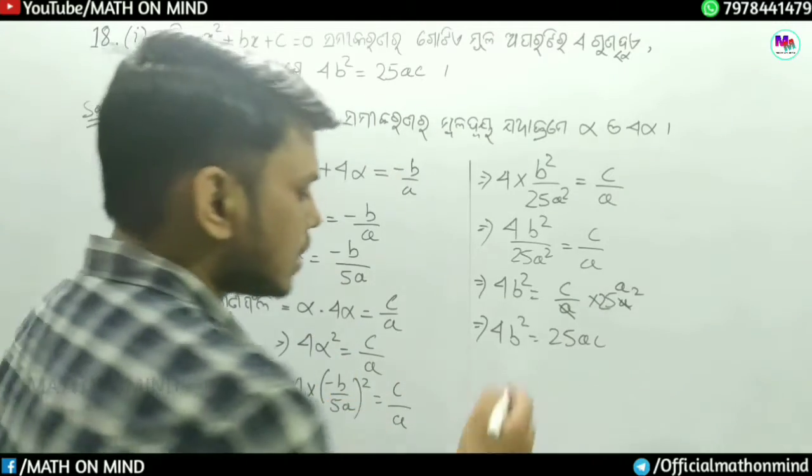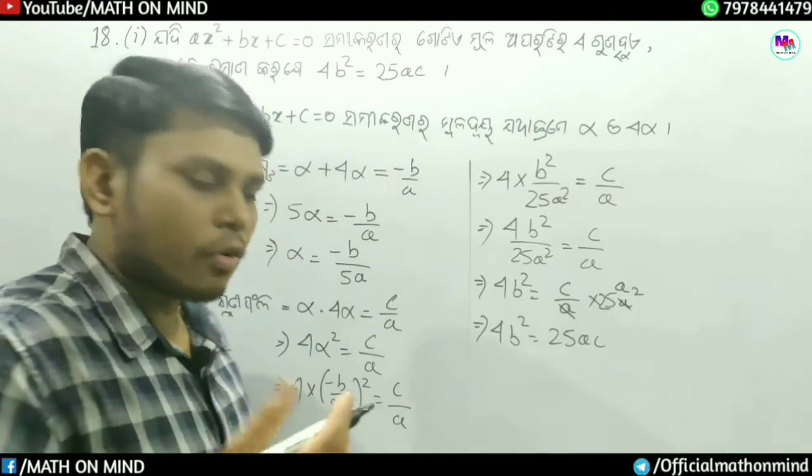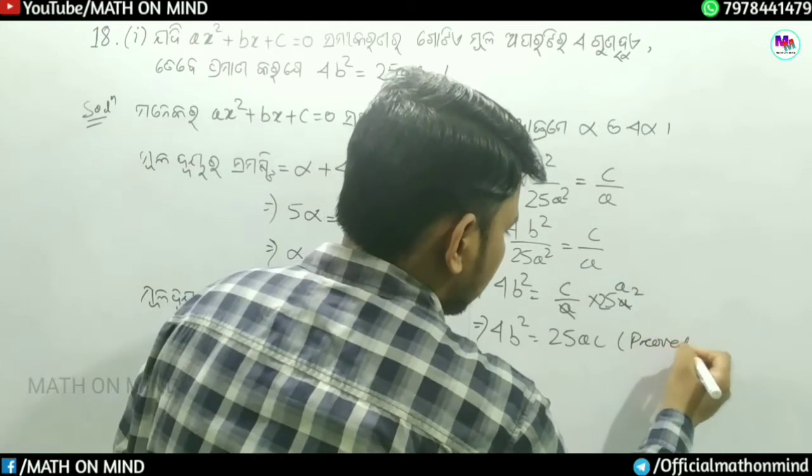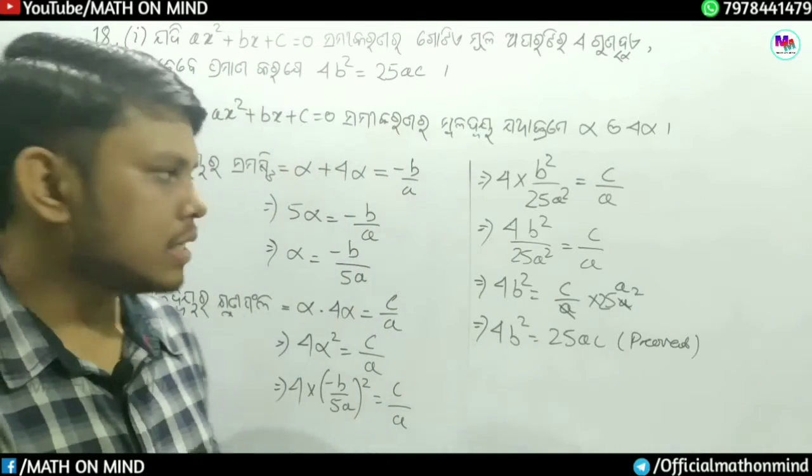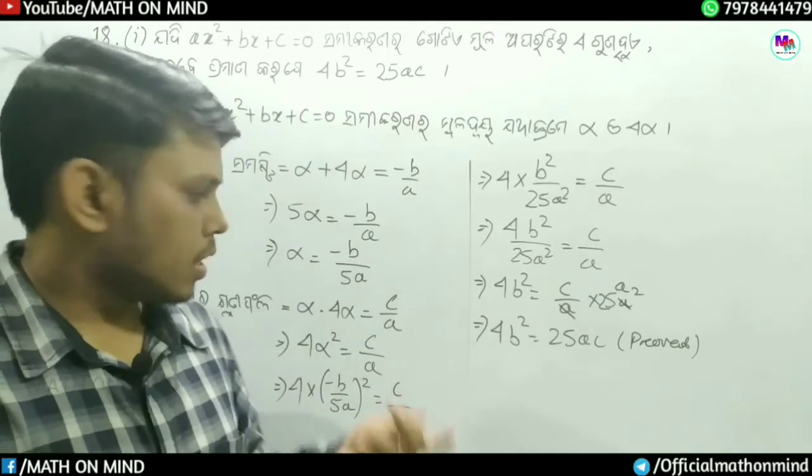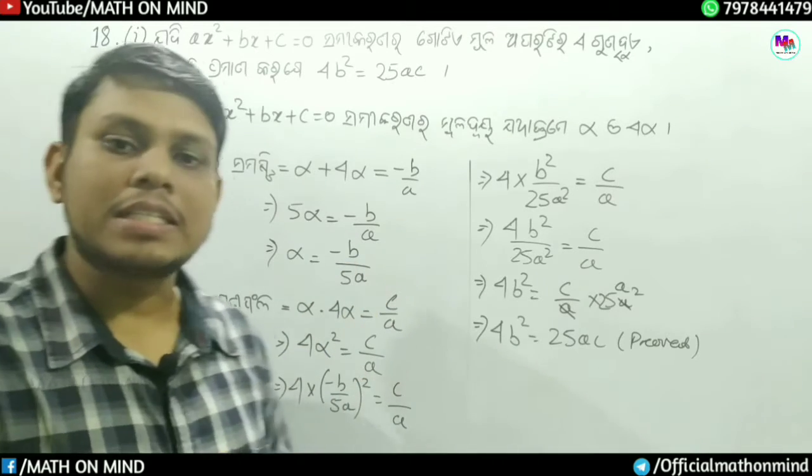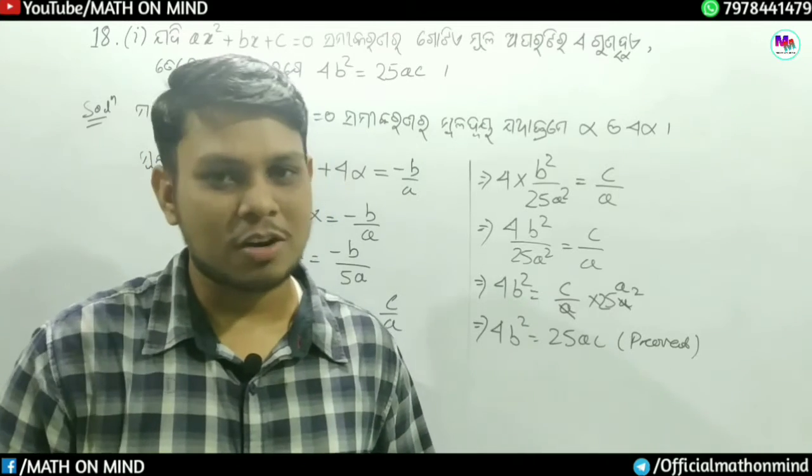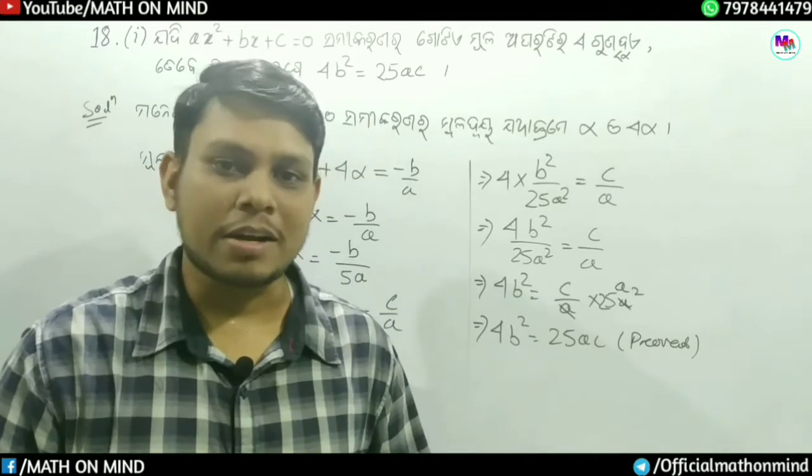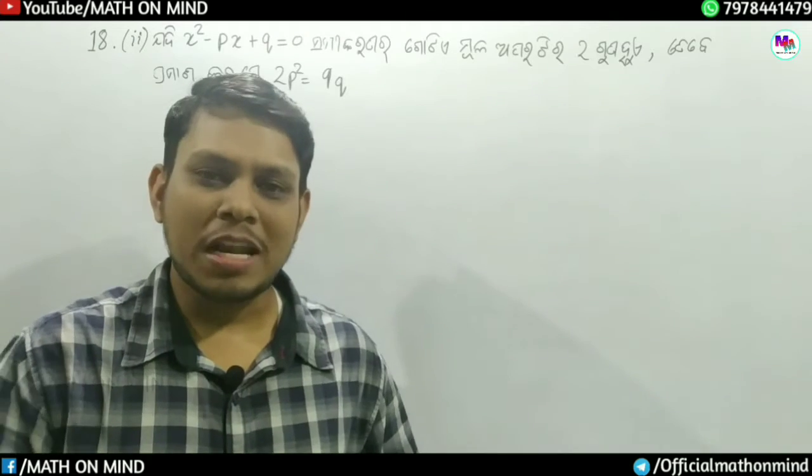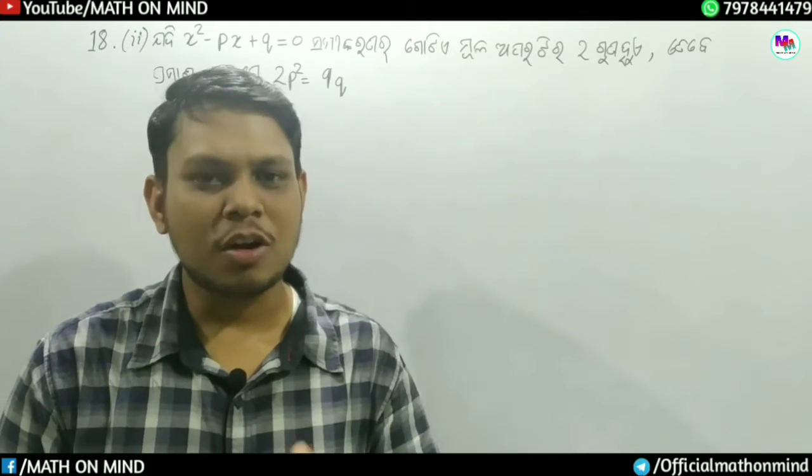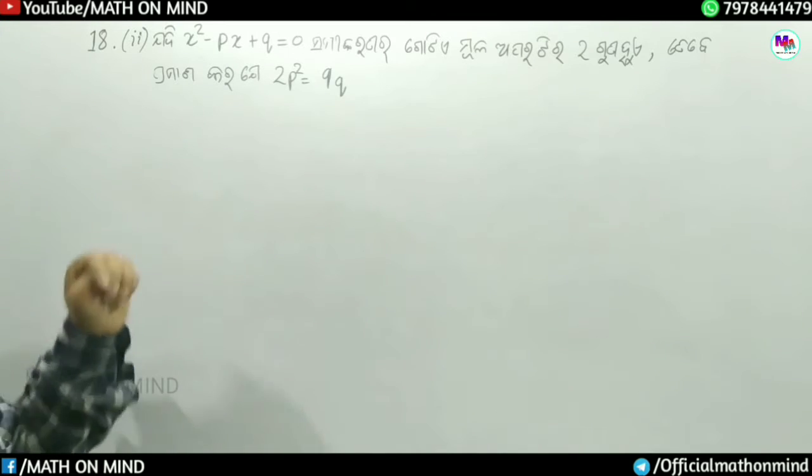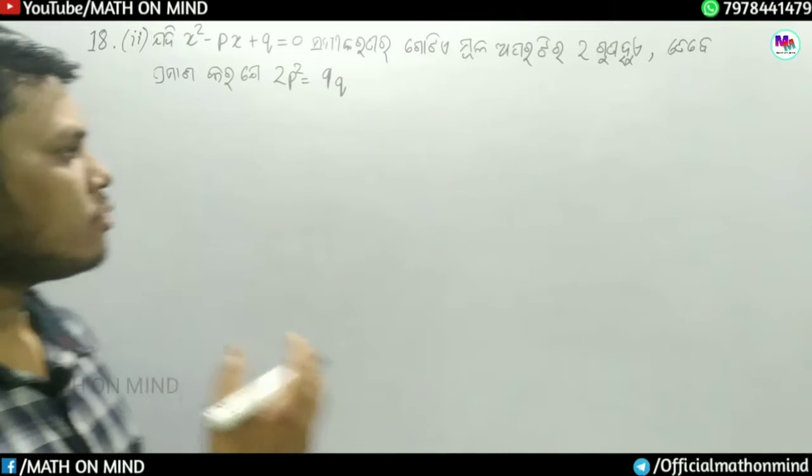4 b square divided by 25 a square is equal to c divided by a. Multiply both sides by 25 a square to get 4 b square equal to 25 ac. That's what we need to prove.